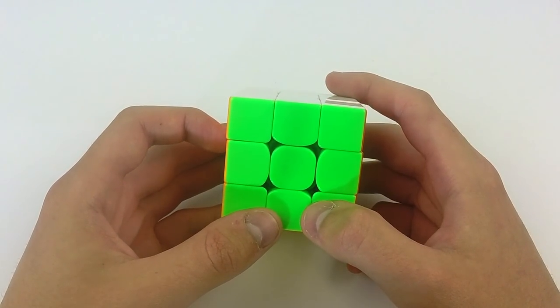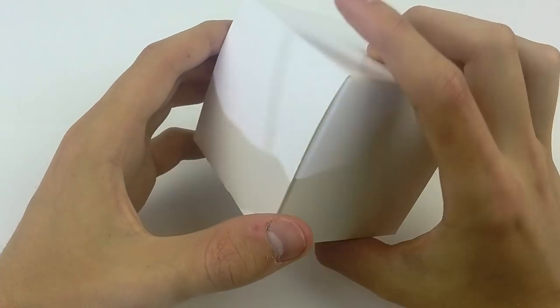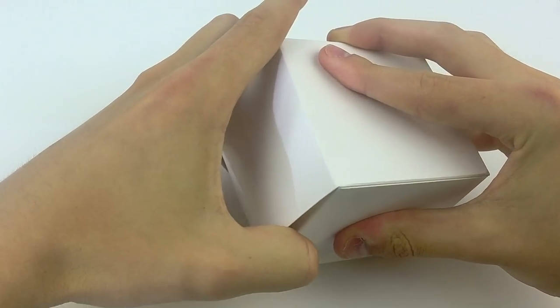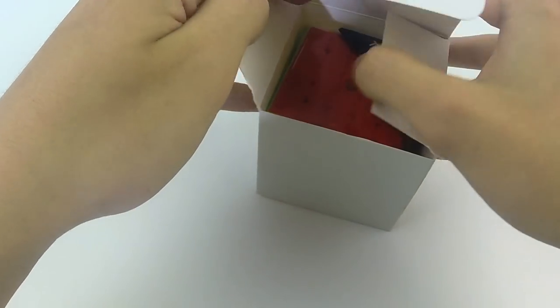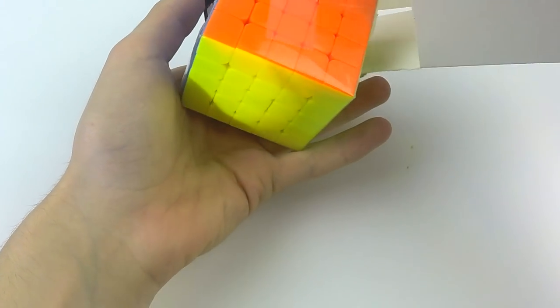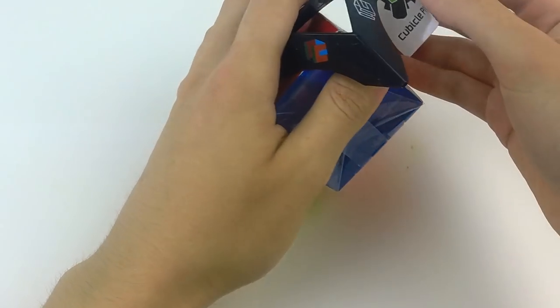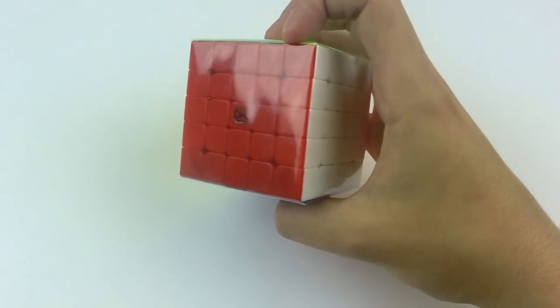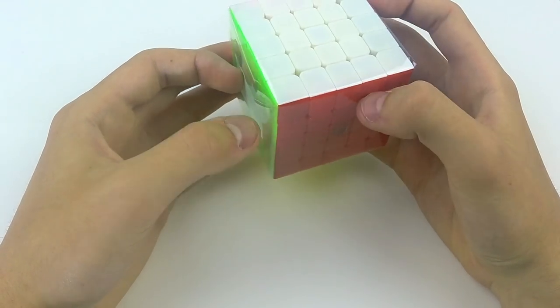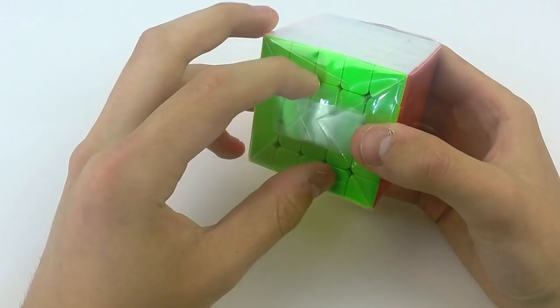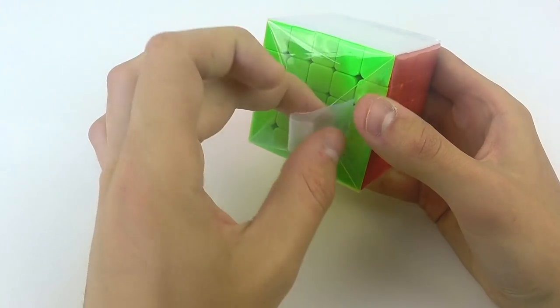But first, let's get into that mystery package. Okay, here we go. Well, let's see what's in here. Ooh. And this... This is a 5x5 of some sort. Would this be a Wuxuang? I'm not sure.